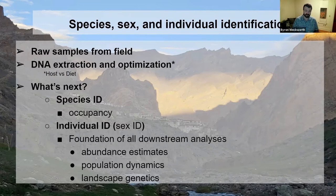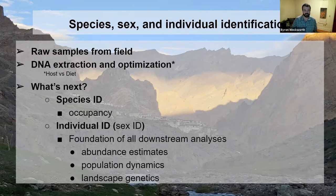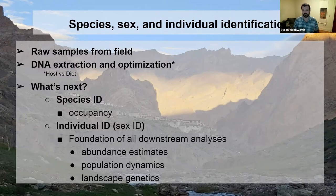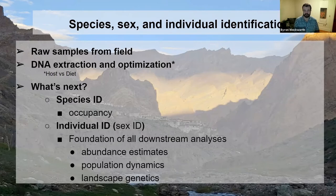The first thing we have to do is figure out: is this actually from our target species? In this case, is it from a snow leopard? We do a species ID, and from that alone, with enough samples replicated across your sampling landscape, you could start doing occupancy analyses. The next stage is individual ID — among all these snow leopards, how many actual individuals are represented? Sex ID goes in parentheses because you'd do that after sorting out individuals.